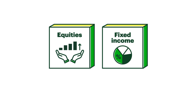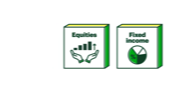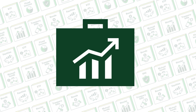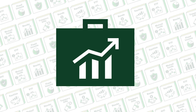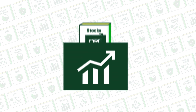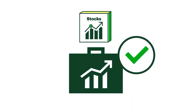One thing you'll notice about each of these investing personas is that they all feature a combination of equities and fixed income. That's because diversification is a crucial part of building out a portfolio — regardless of your financial goals, you don't want your portfolio to live and die by the performance of a single type of investment.